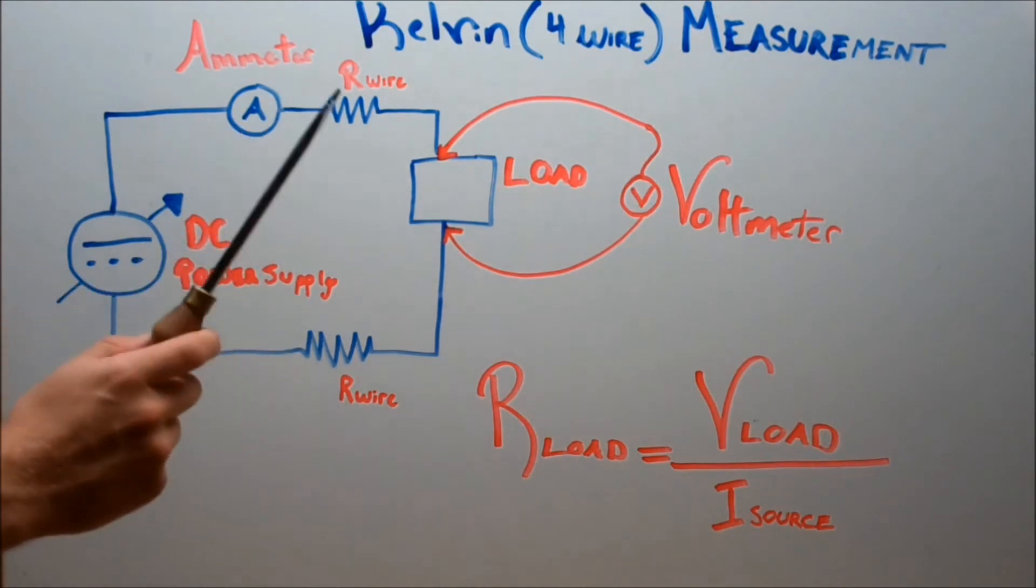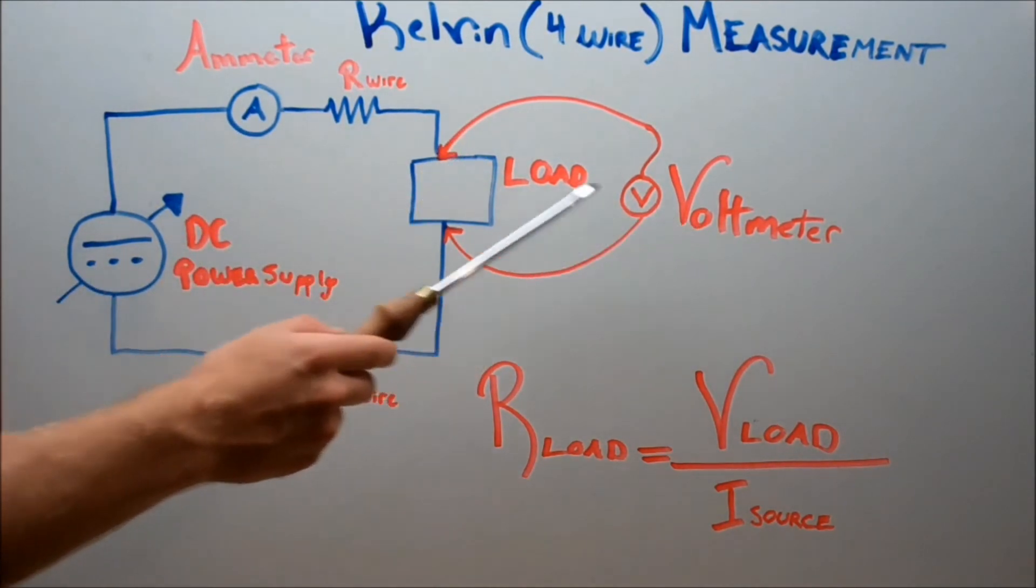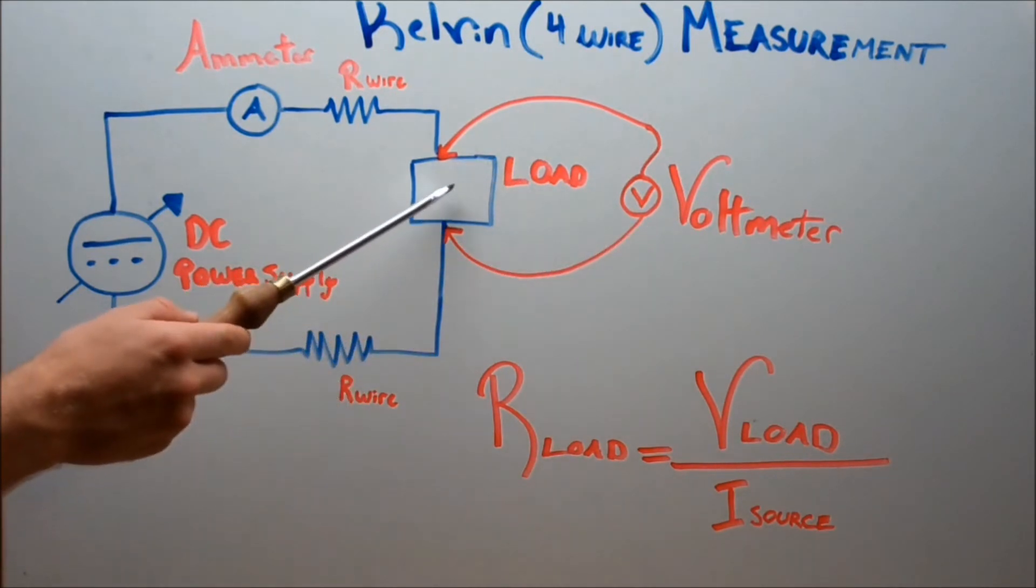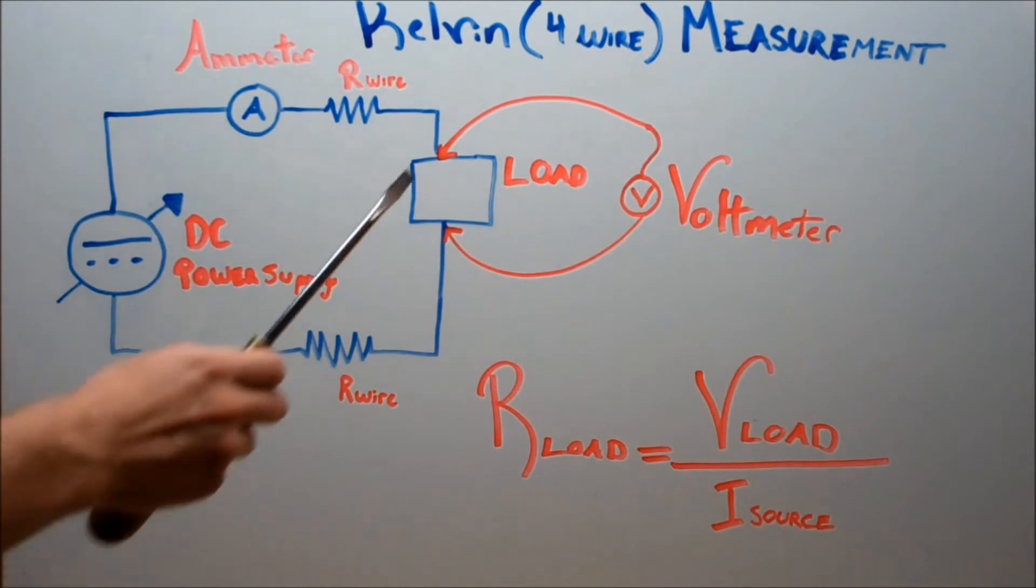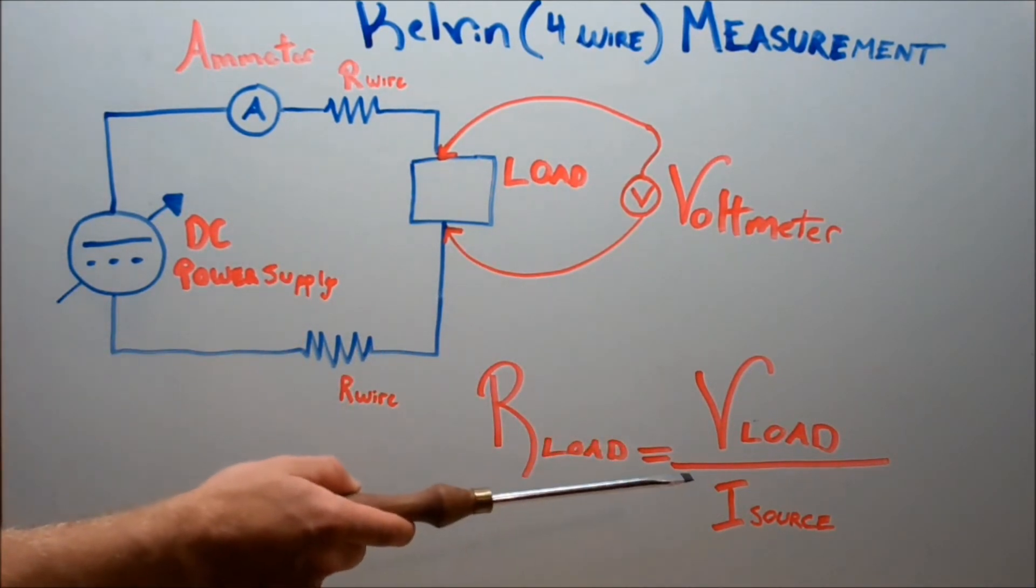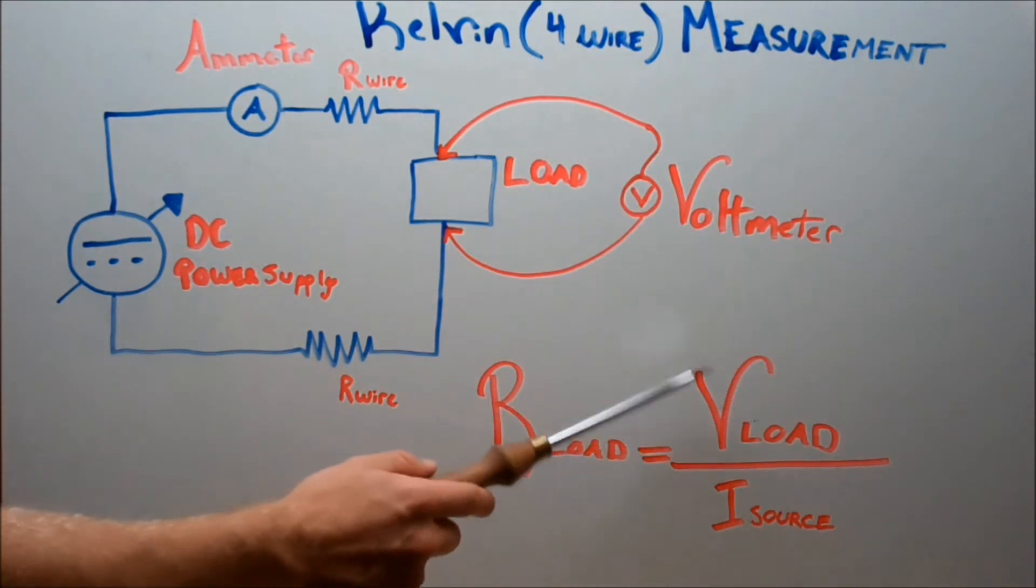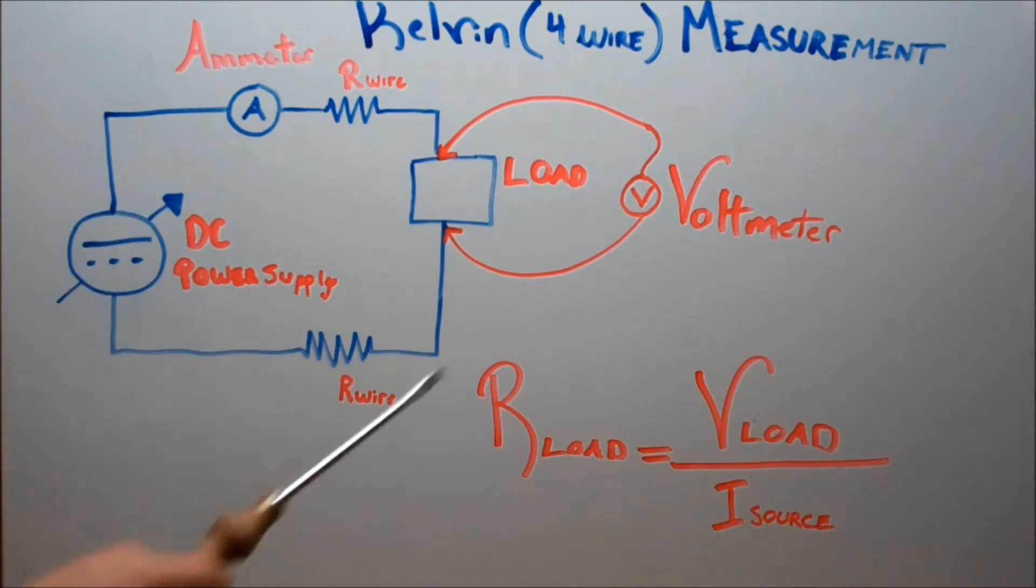So that way we can actually determine the real resistance of a component. What we do is we take a voltage reading across the load, which in this case will just be our wire today, and that's going to give us the ability to plug it into the formula. So we take our load - we determine R_LOAD equals V_LOAD divided by I_SOURCE, because it's a series circuit, so current will be exactly the same throughout the circuit. Let's actually see how the circuit performs and see if we can get an accurate reading on the impedance of a wire.